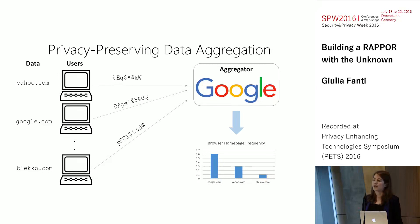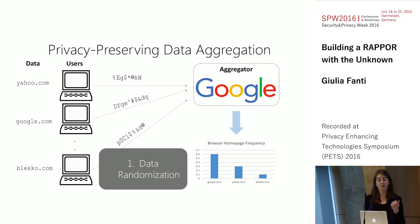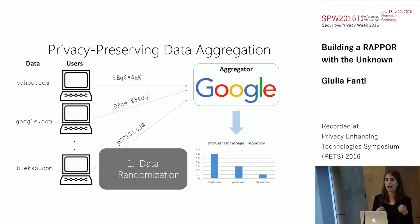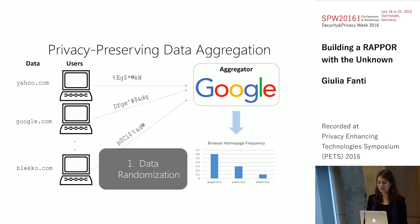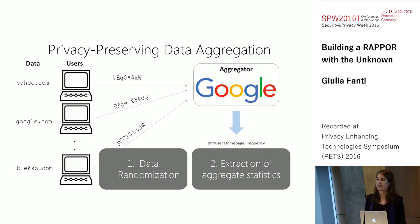There are two main components in this pipeline. The first is the data randomization phase — choosing how to add noise to your data and how much noise to add. The second phase is actually extracting useful statistics from that noisy data. In this talk, I'm going to focus mainly on phase two.